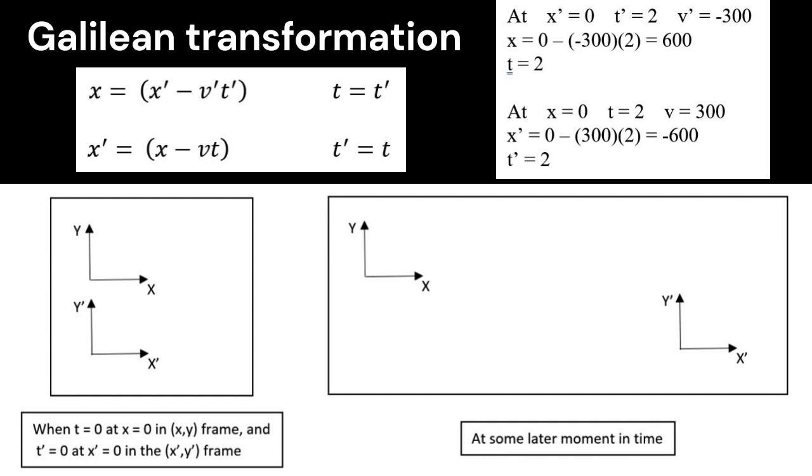If at x prime equals 0, that's the 0 point on the lower frame, at x prime equals 0, at 2 seconds, and the velocity of the other frame in the primed frame is minus 300. Suppose the primed frame is an airplane that's flying past a tower. The tower is going negative 300 feet per second relative to the airplane.